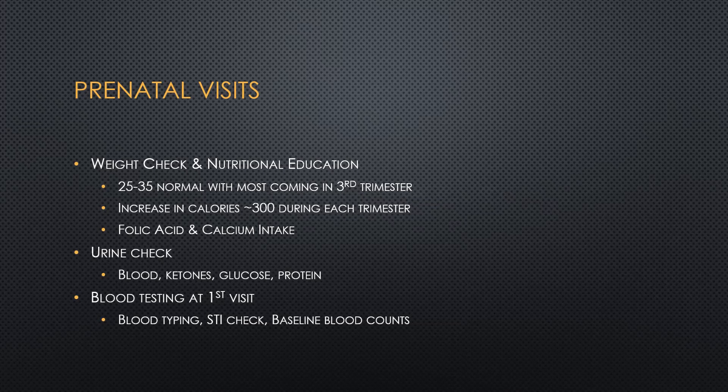Urinalysis is going to happen at every single wellness check. We're checking for blood or white blood cells in case there's an infection, ketones in case they are dehydrated or in a starvation state, glucose in case they have diabetes, and protein in case they are having issues with high blood pressure. There are lots of different things we can tell just by the urine.